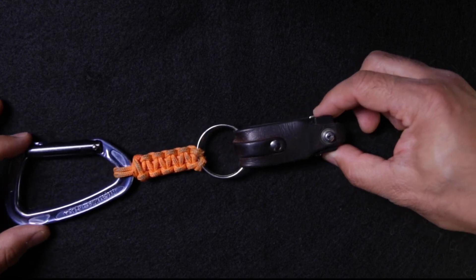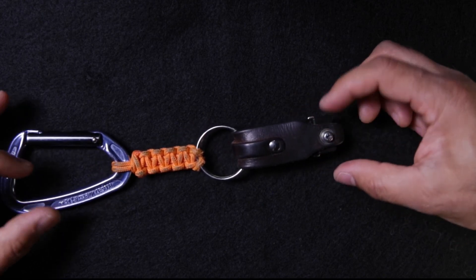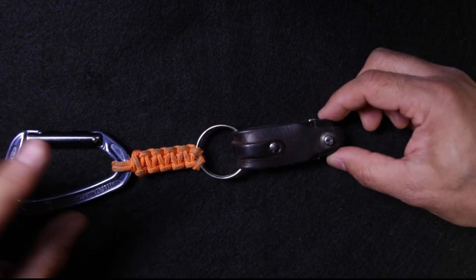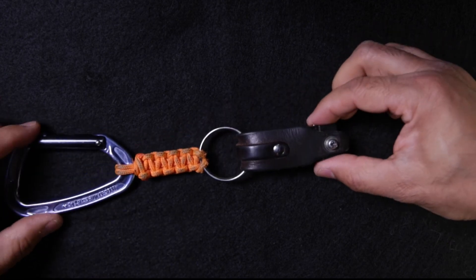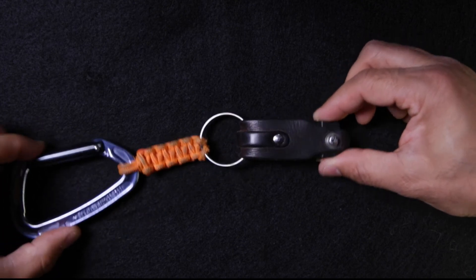What I would probably do to improve on this design would be to put some kind of Loctite thread lock on that post, just to be absolutely sure it was not going to come undone, because the pendulum action can work the screw backwards over time.